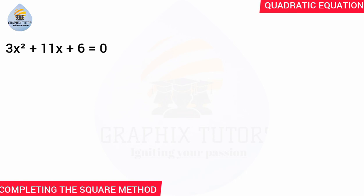What you do first of all is take the constant to the right hand side of the equation. The constant is 6, so I'll take it to the right hand side. When it moves to the right hand side, the positive 6 will turn to negative. So we have 3x squared plus 11x equals minus 6.